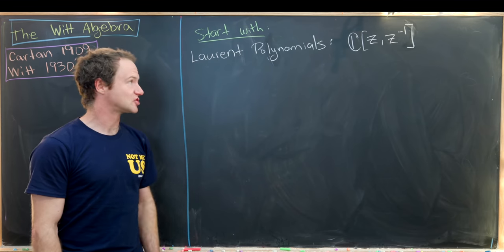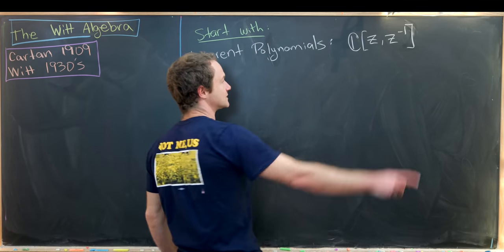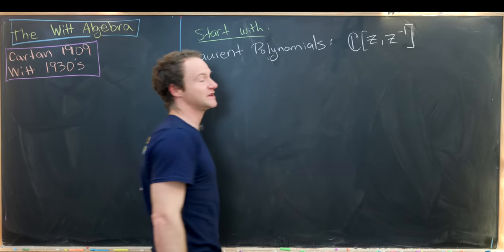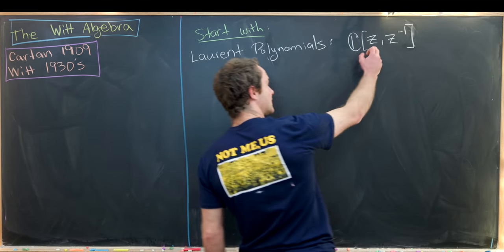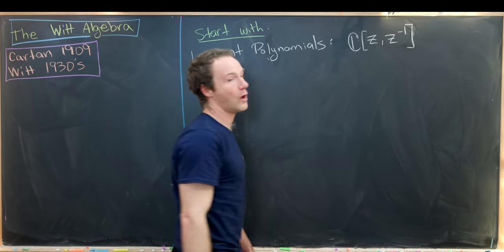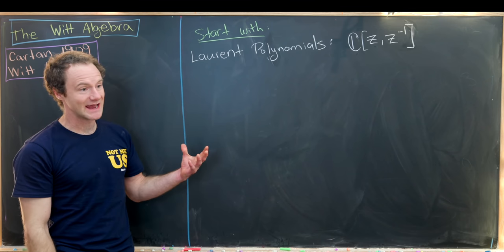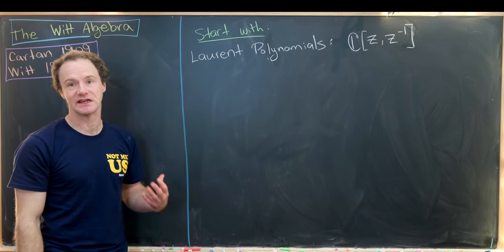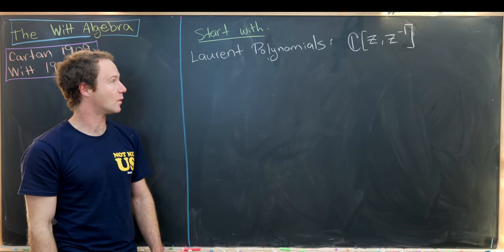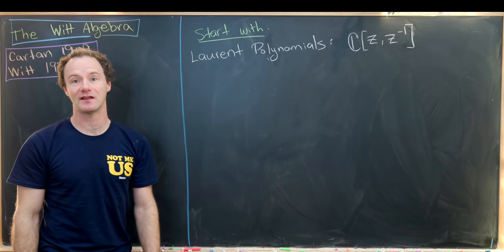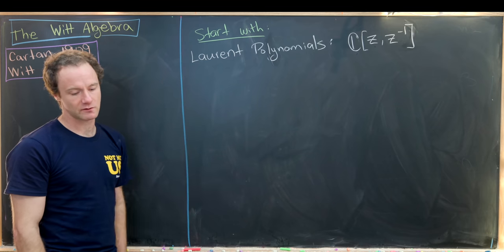We're going to start with the algebra of Laurent polynomials. Those are polynomials with complex coefficients, and they really have two interconnected variables — z and 1 over z. You can think of these as two different variables, but they're connected by the fact that z times z inverse is just equal to 1.